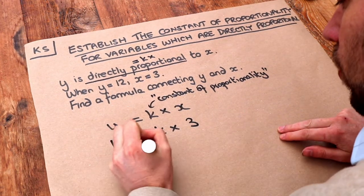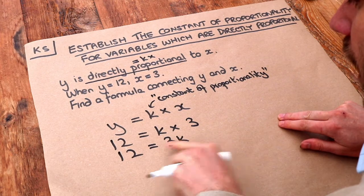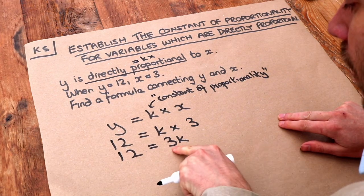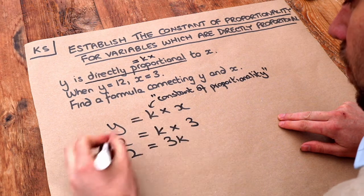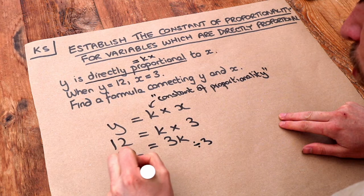If you want to simplify that, well k times 3 is just 3k. So if 3 lots of k is 12, then how do we get rid of that 3? Well we just divide both sides by 3, and then 12 divided by 3 is 4.